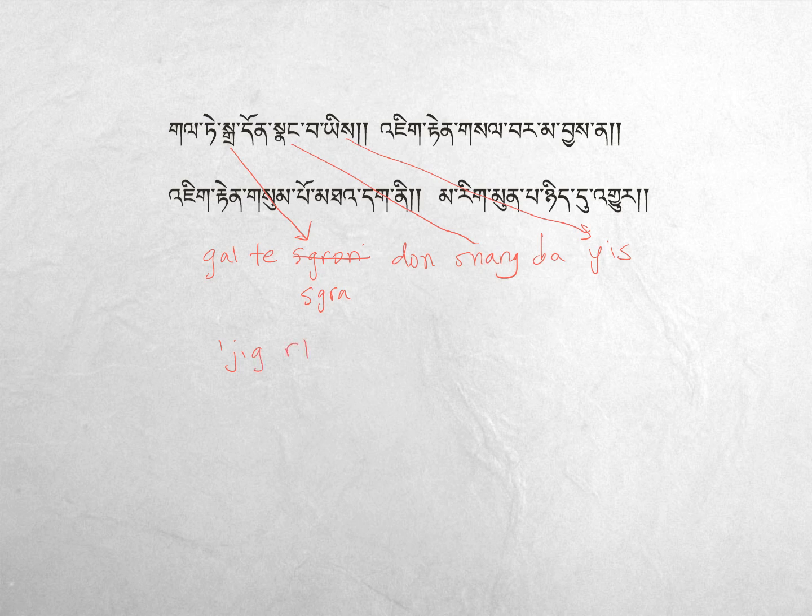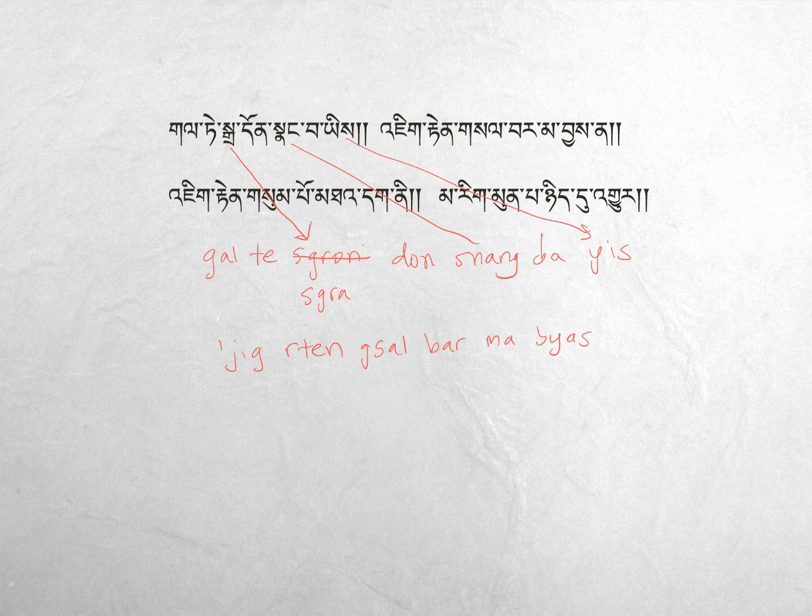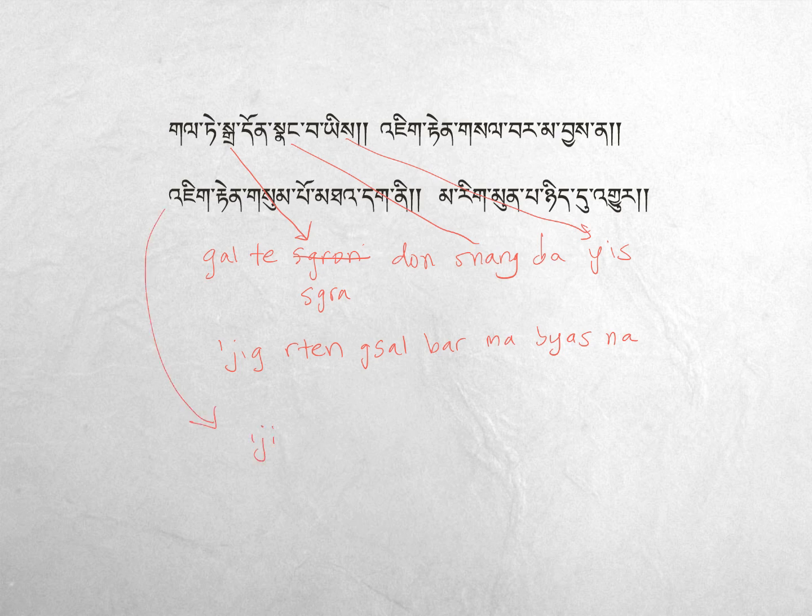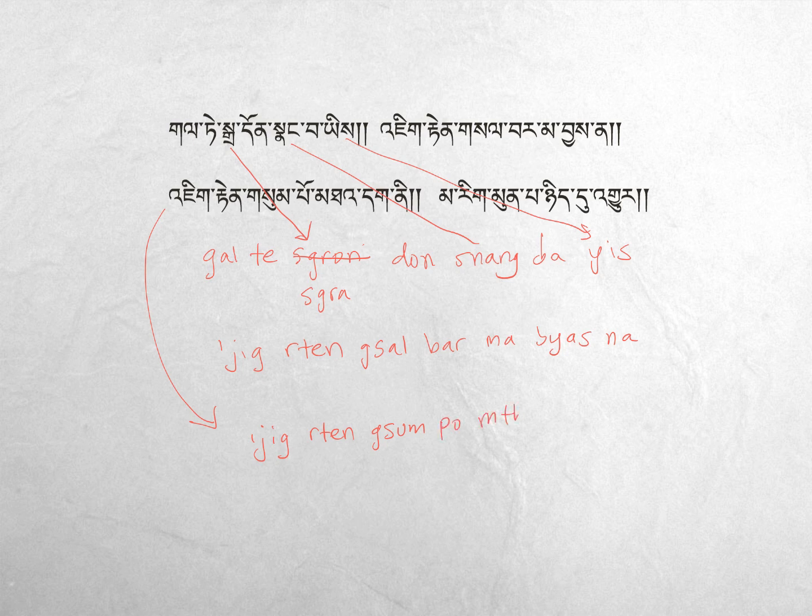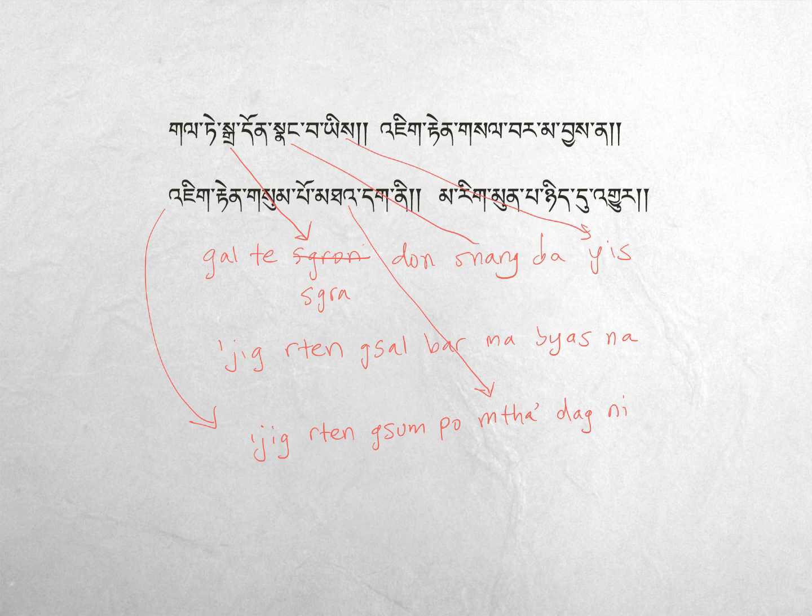Jig. Jig rten gsal bar ma byas na. That was this second phrase. Now the third one: again we have jig, so apostrophe...